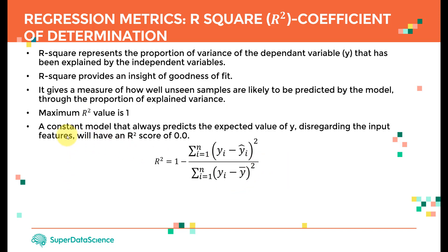What if we have a model with R-square equals 0? That means it's essentially a useless model — a constant model. It will always predict the expected value of Y disregarding the input features, because R-square equals 0 means any increase in the output has nothing to do with the independent variable X.